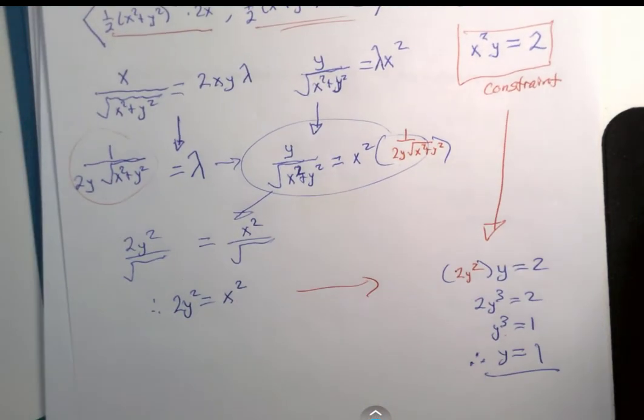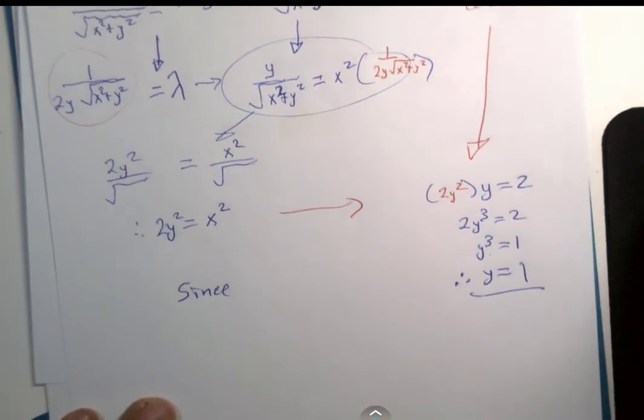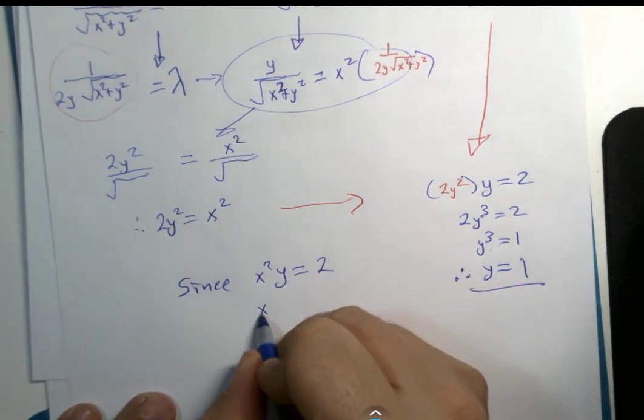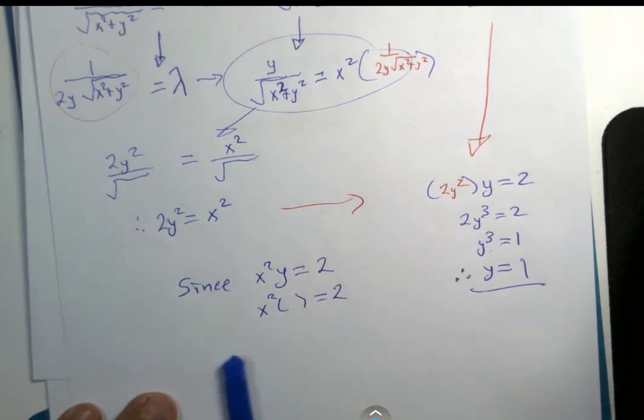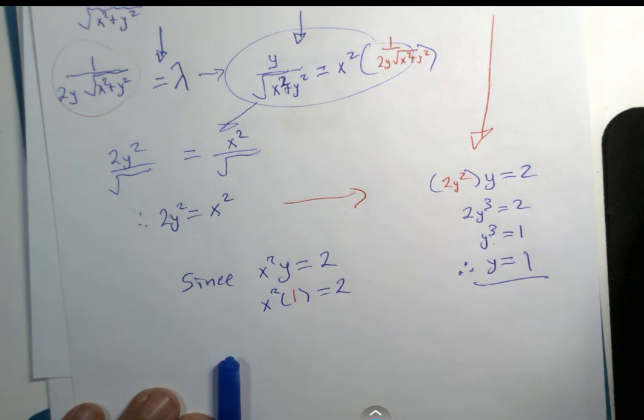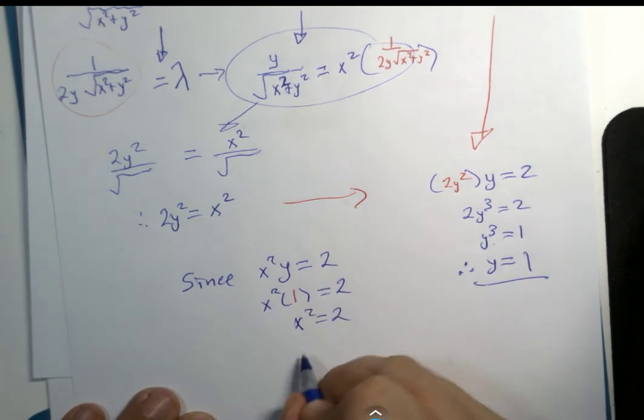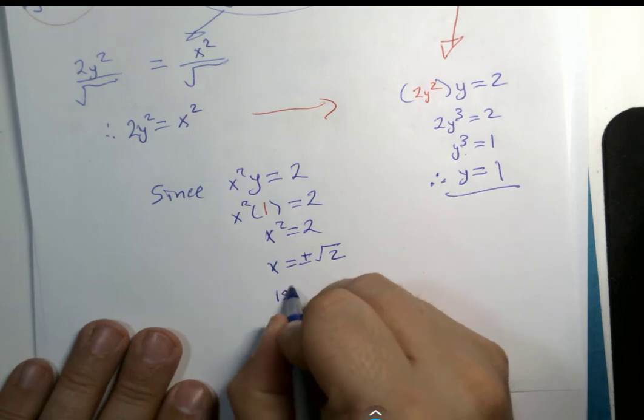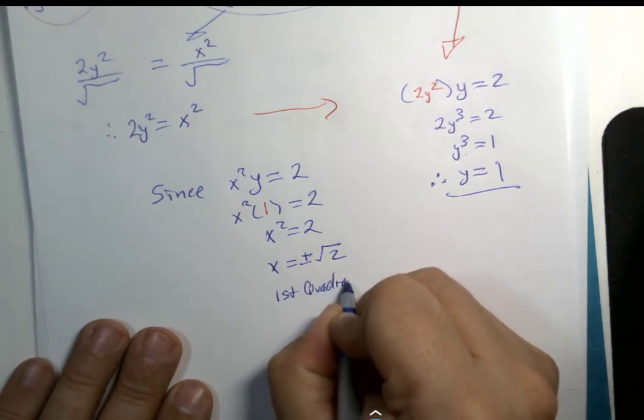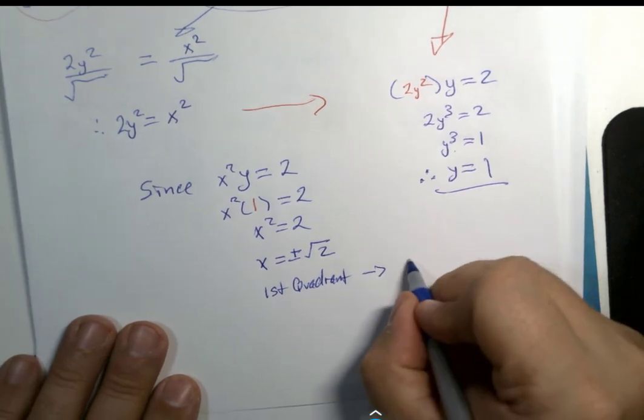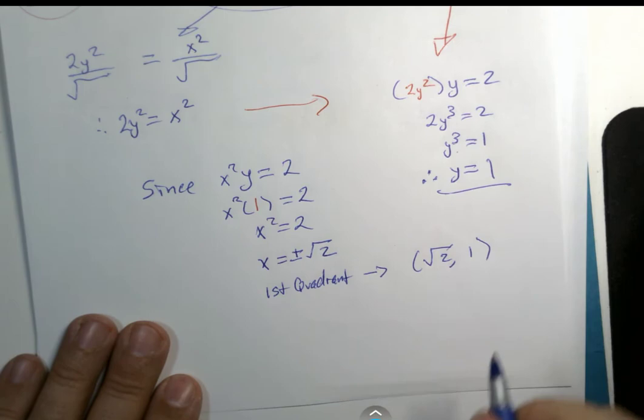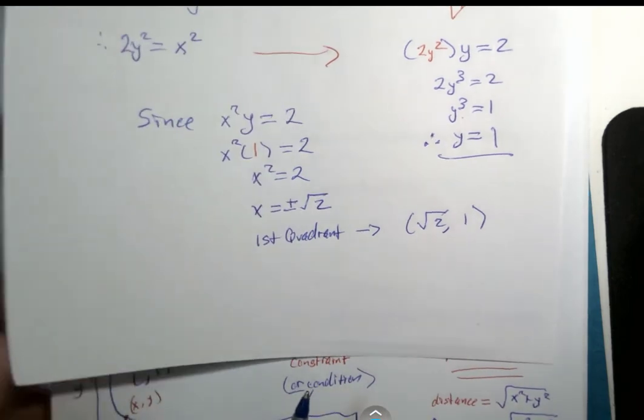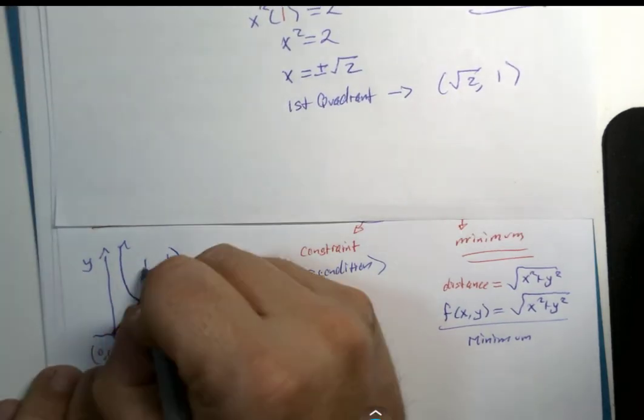Well, that's right. Since x squared y equals 2, and we just discovered that y equals 1. I know that x squared is 2, and so, therefore, x equals plus or minus the square root of 2. But we are in the first quadrant.